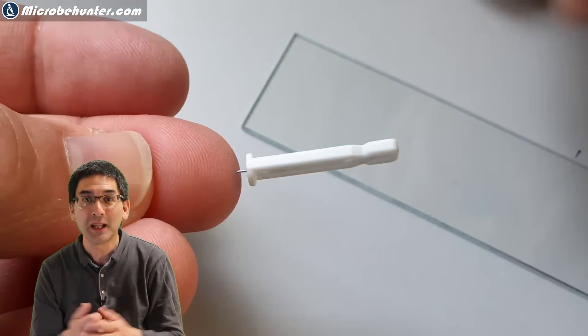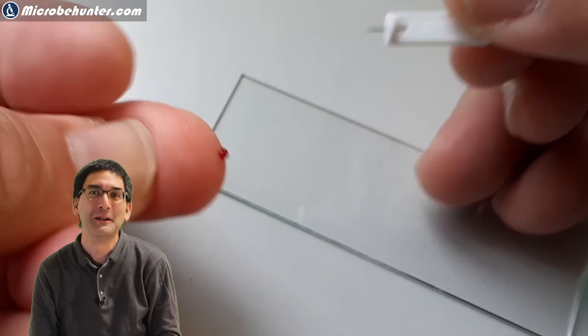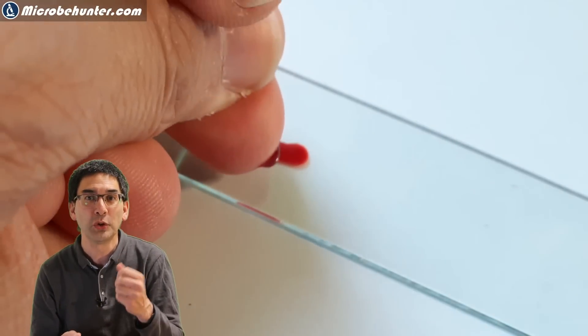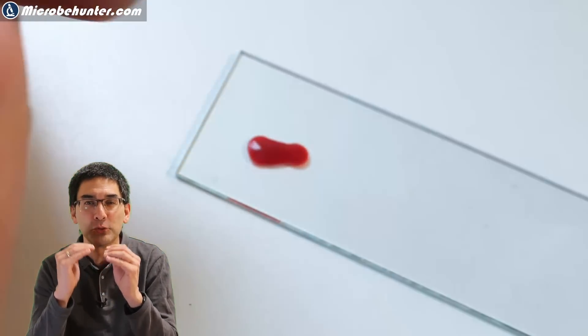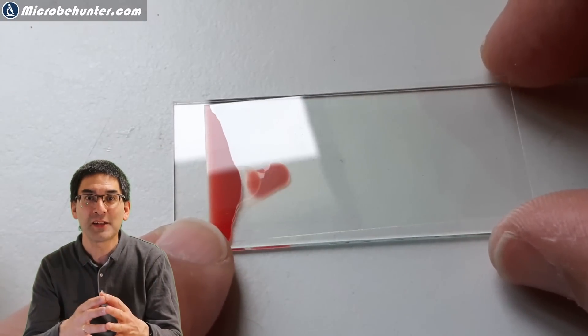Observing them is relatively easy provided that you're brave enough to prick your little finger. A small drop of blood is enough. Do not use too much because the blood film should be very thin. I basically placed the cover glass on it.